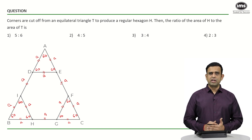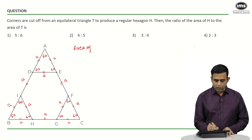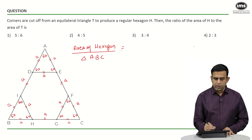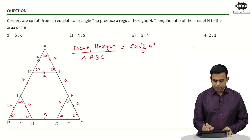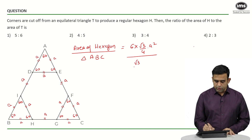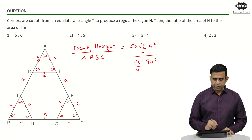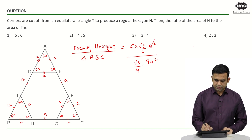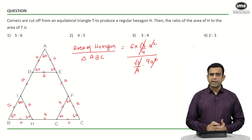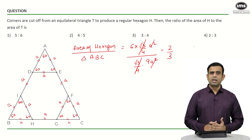We know the side of the hexagon is a and the side of triangle ABC is 3a. The ratio of the area of the hexagon to the area of triangle ABC equals 6·(√3/4·a²) divided by (√3/4·(3a)²). This simplifies to 6 divided by 9, which is 2/3. The required answer is option number 4.